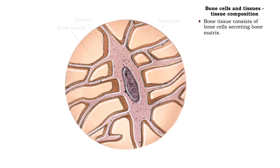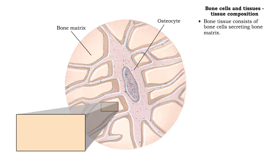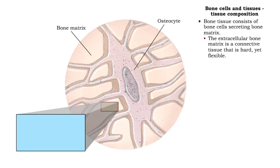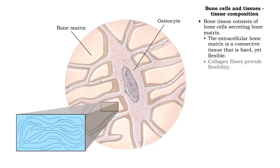Bone tissues consist of cells secreting an extracellular matrix. The matrix of bone tissue is the hardest of the connective tissues yet maintains flexibility. Flexibility comes from collagen fibers running through the matrix.